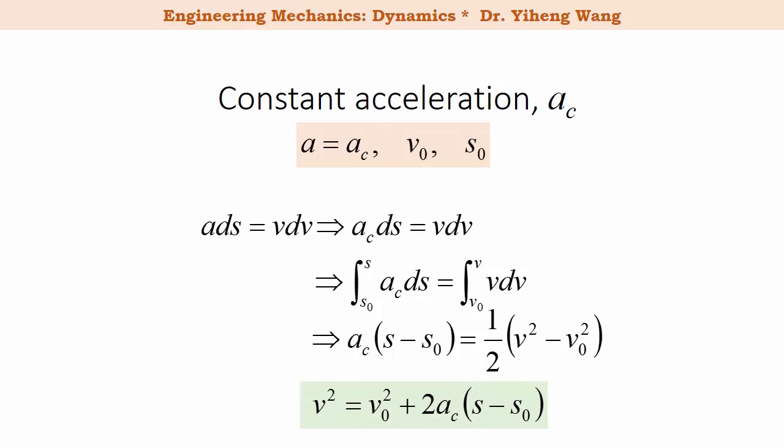As you can see, this equation provides a direct relation between the velocity of the object and its position at the same point. Only v and s are variables in this equation.